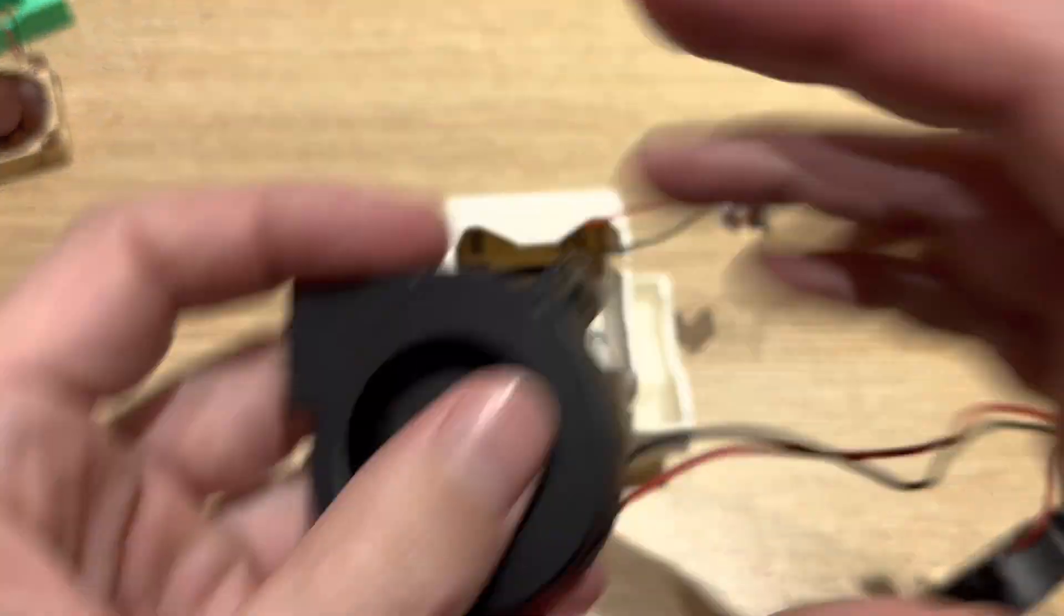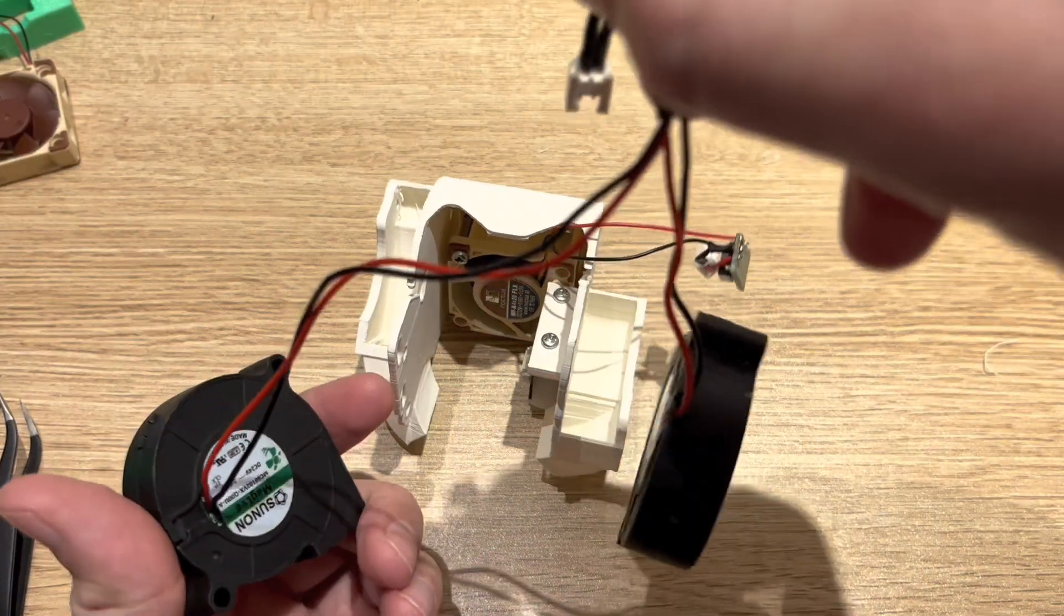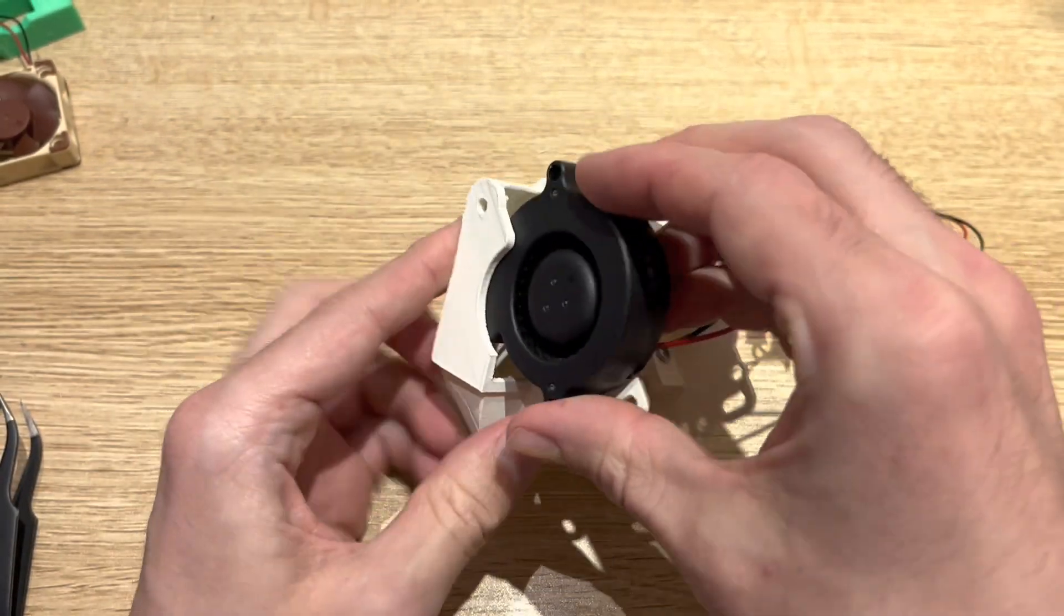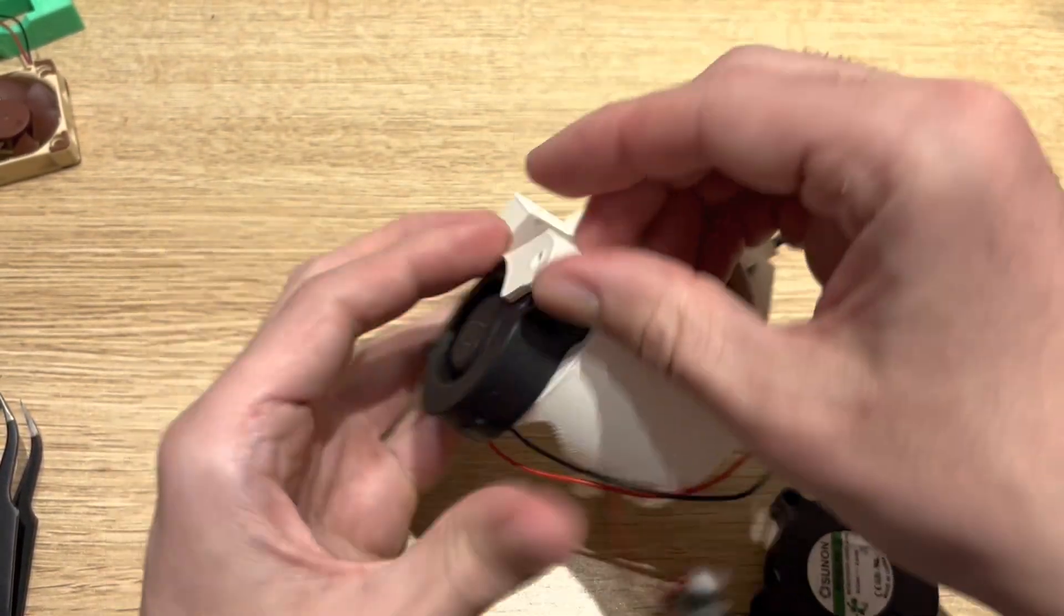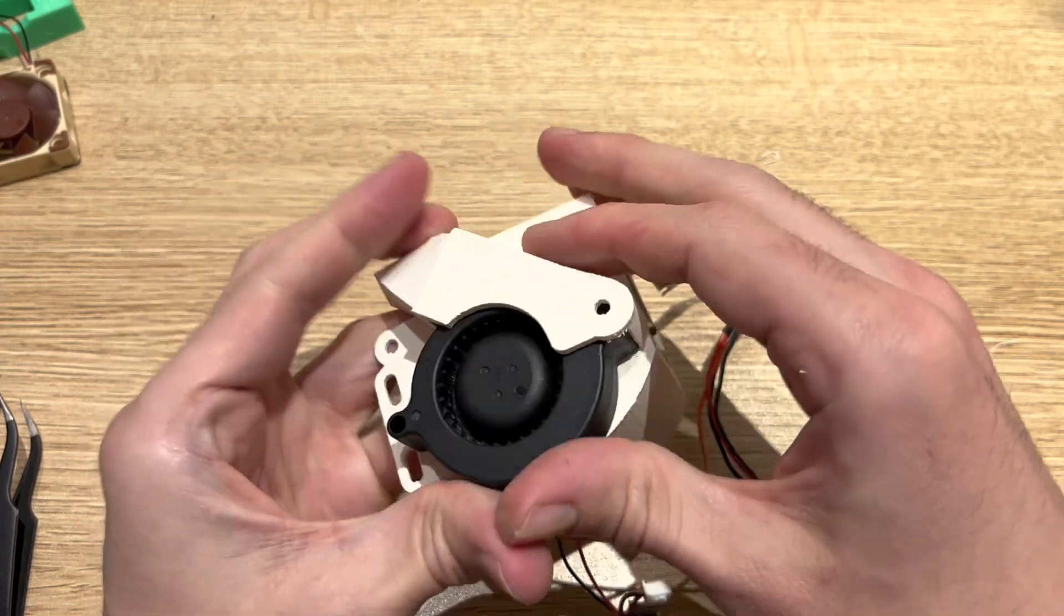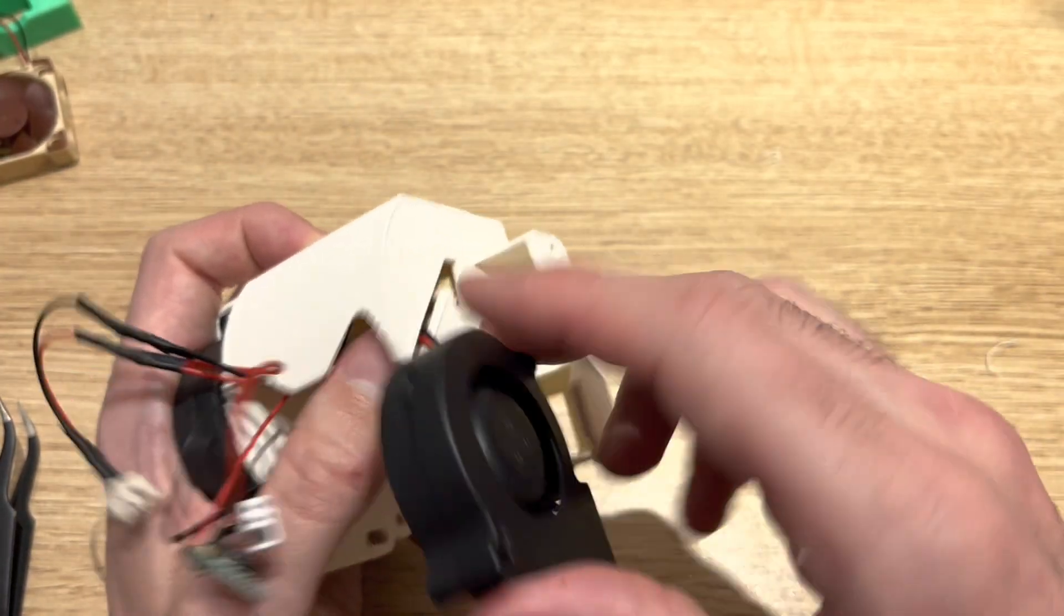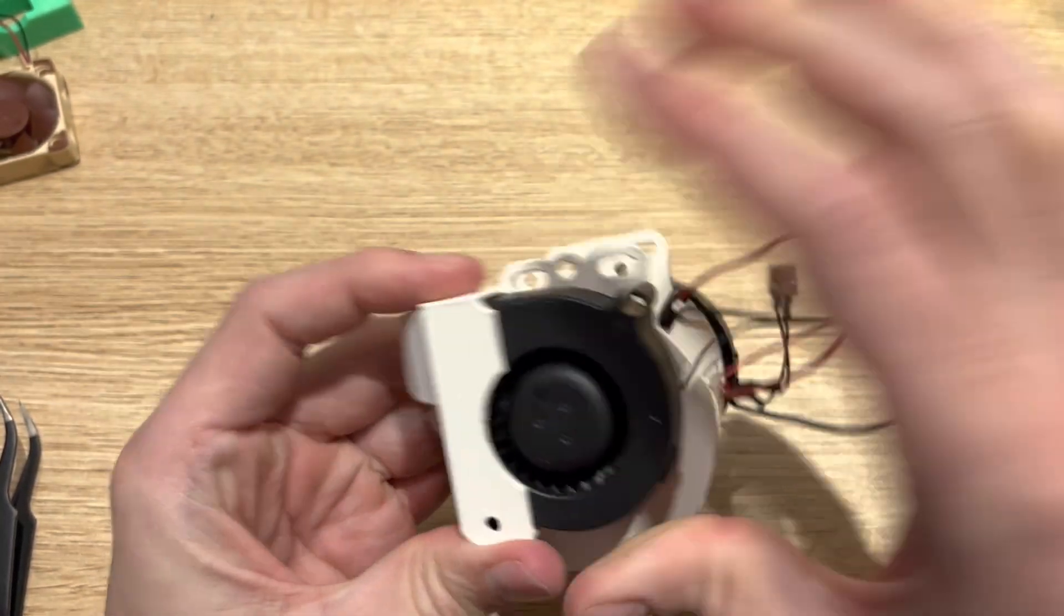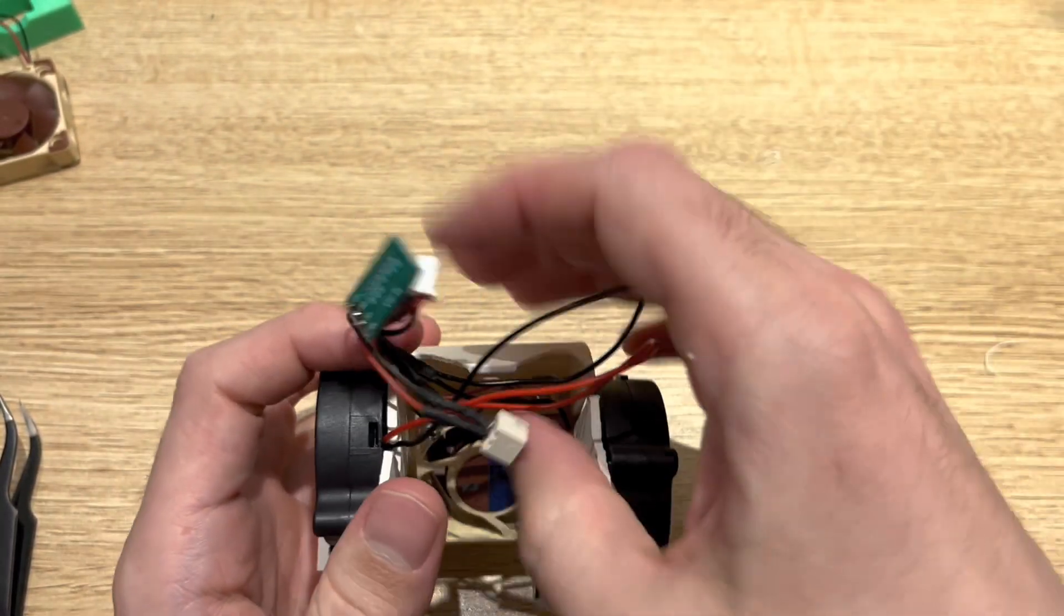So next up here we're going to install these two Noctua 5015 fans that are connected here with this Y harness. So these fans actually snap into place pretty nice on the sides here - you can use some screws to hold them in place if you want. And then here as I mentioned, here's that long slot so we can slide the wire through and install the fan on the right side here. So for now the wires up here are a mess, we'll get that cleaned up later once we assemble it on the printer.